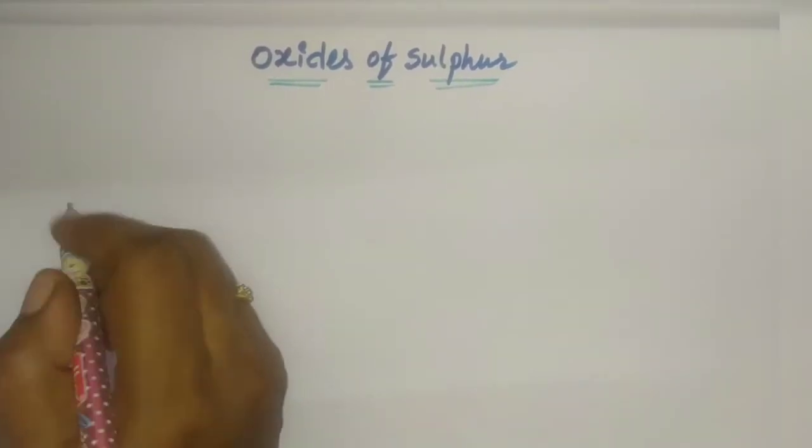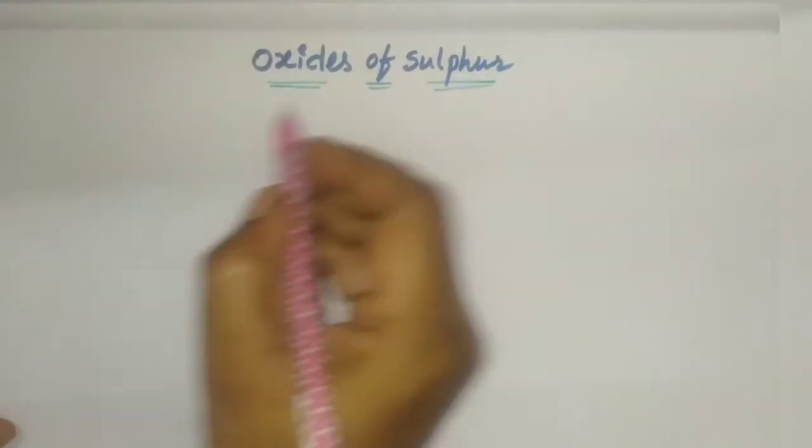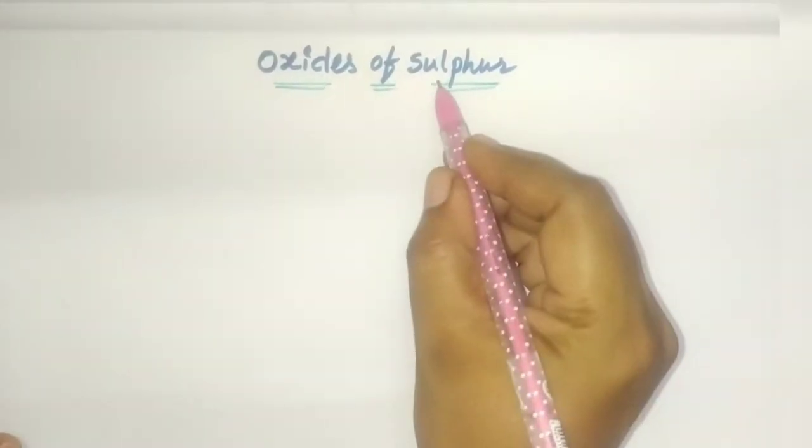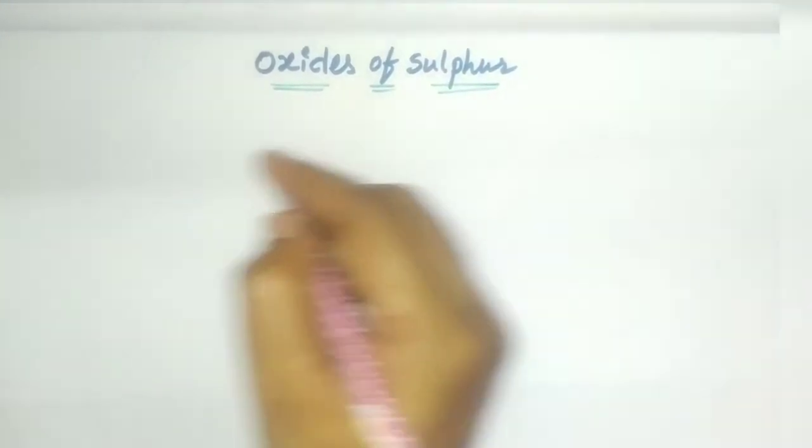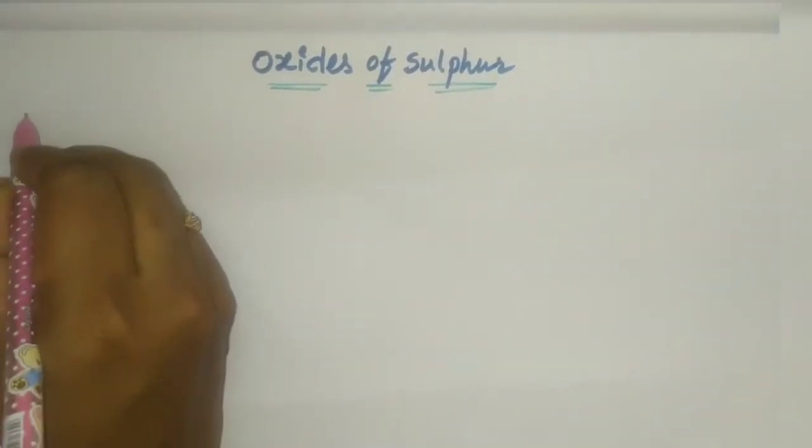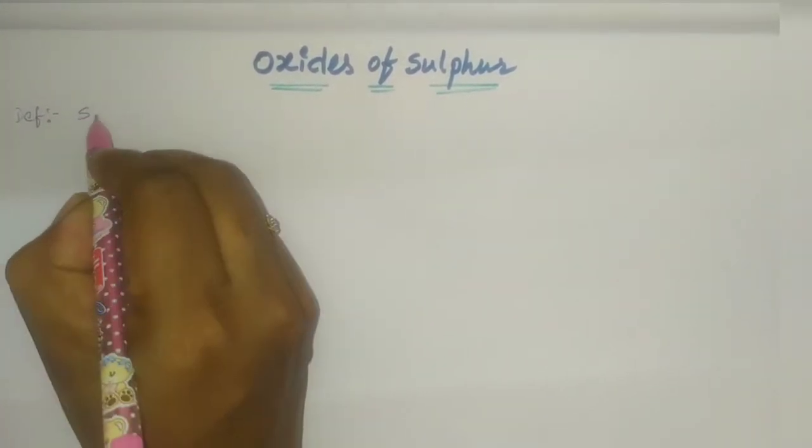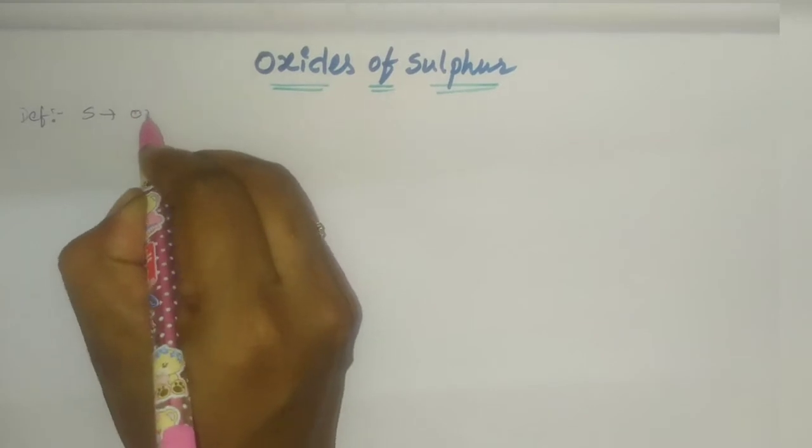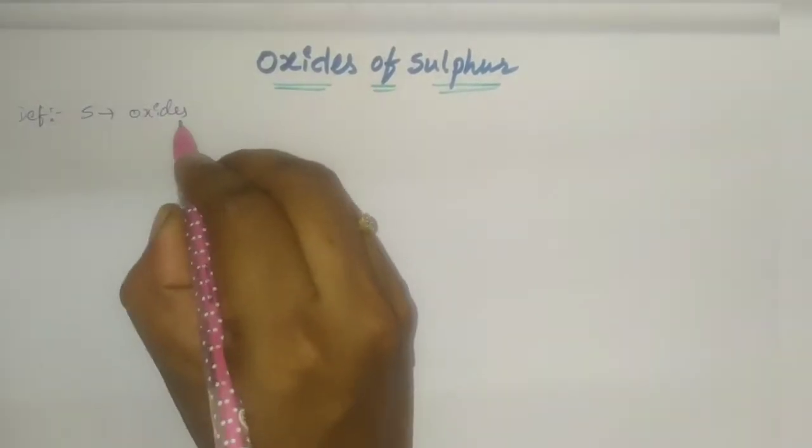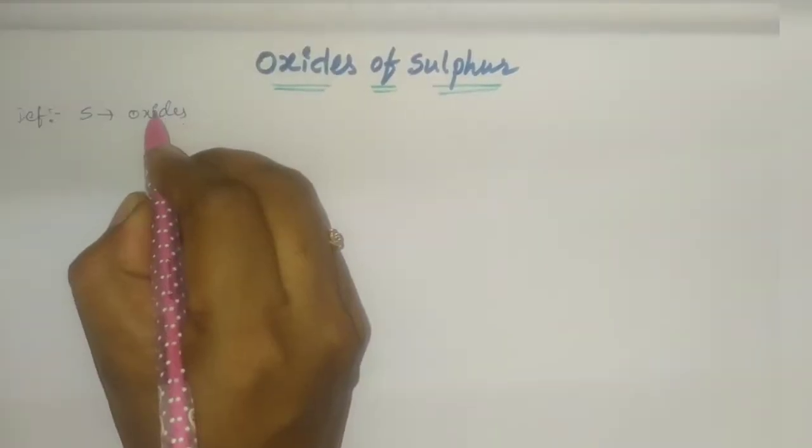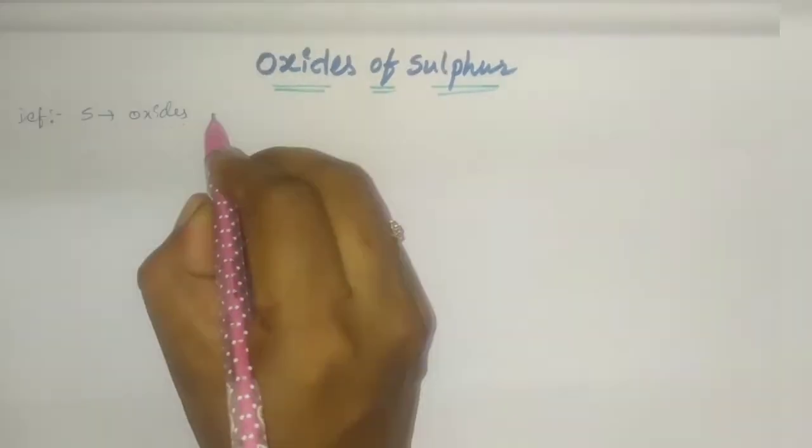Hi everyone, welcome to my channel. Today our topic is oxides of sulfur. Here oxygen atom and sulfur atom both are combined to form sulfur oxides. In the definition part, sulfur forms many oxides.